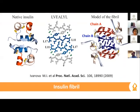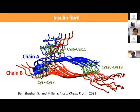We extended Eisenberg's structure and predicted the full-length insulin fibrils, as you can see here. Chain A is shown in blue and chain B in red, and we have all three disulfide bonds.